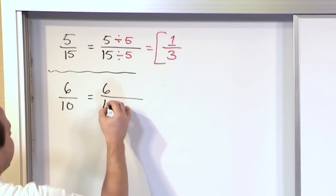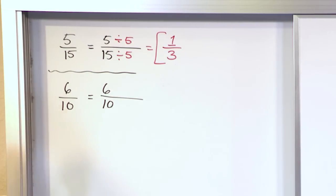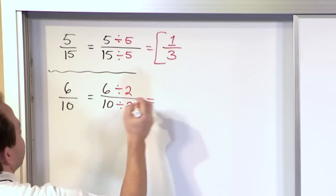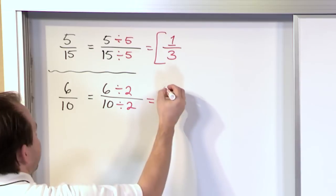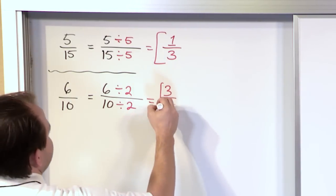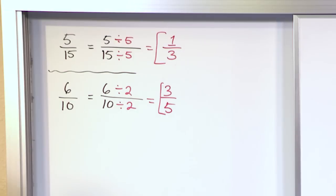So let's do 6 divided by 10 or 6 tenths and we'll divide the top by 2 and we'll divide the bottom by 2. So 6 divided by 2 is 3. 10 divided by 2 is 5. So I have 3 fifths and that's the final answer on that one.